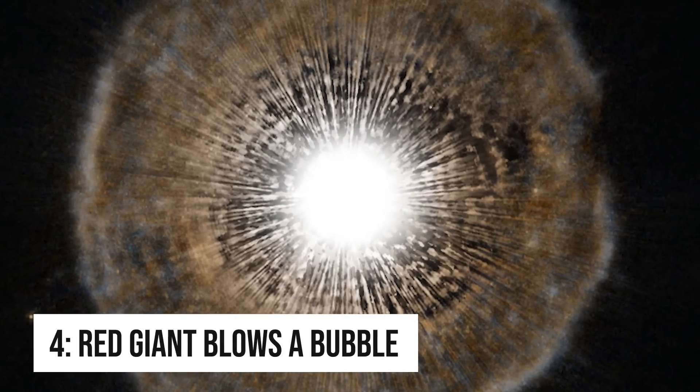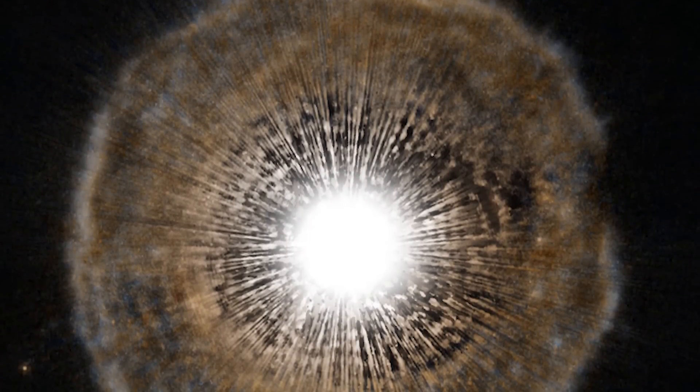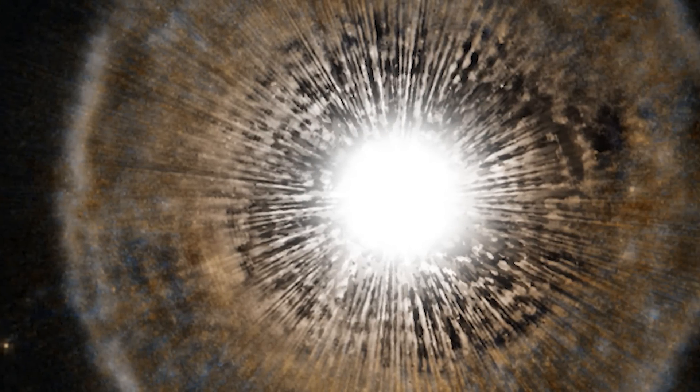Number four, red giant blows a bubble. A bright star is surrounded by a tenuous shell of gas in this unusual image. U Camelopardalis, or UCAM for short, is a star nearing the end of its life. As it begins to run low on fuel, it's becoming unstable. Every few thousand years, it coughs out a nearly spherical shell of gas as a layer of helium around its core begins to fuse. The gas ejected in the star's latest eruption is clearly visible in this picture as a faint bubble of gas surrounding the star.